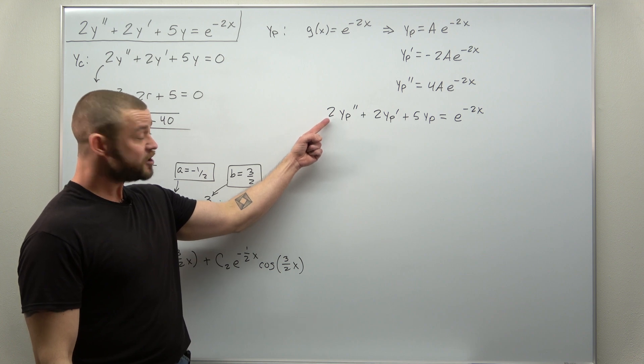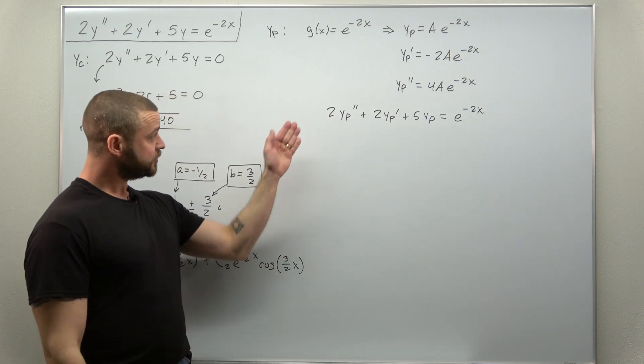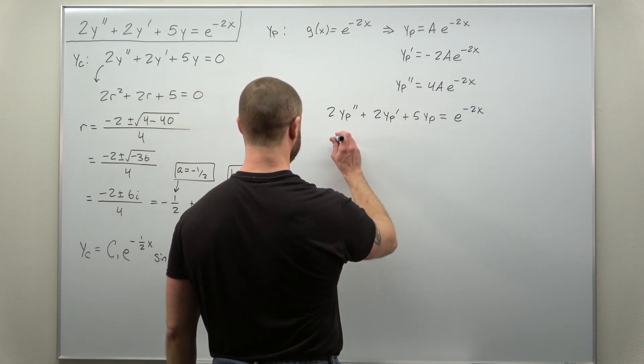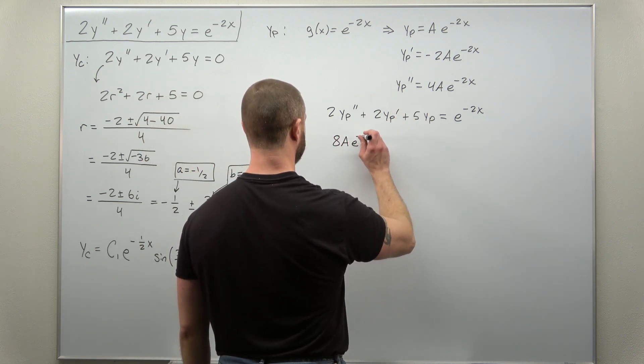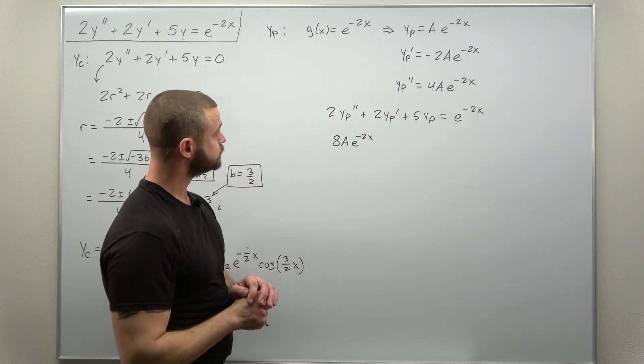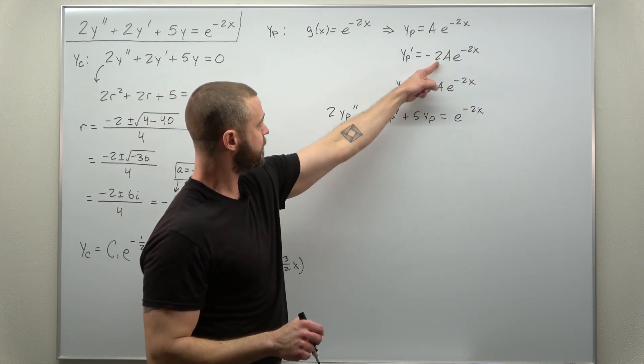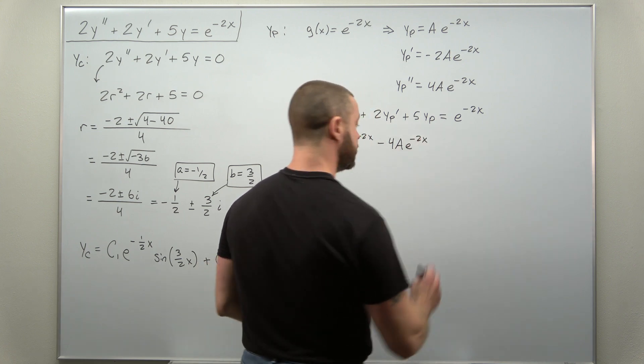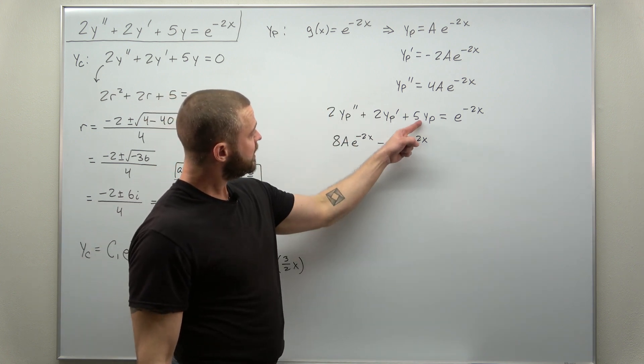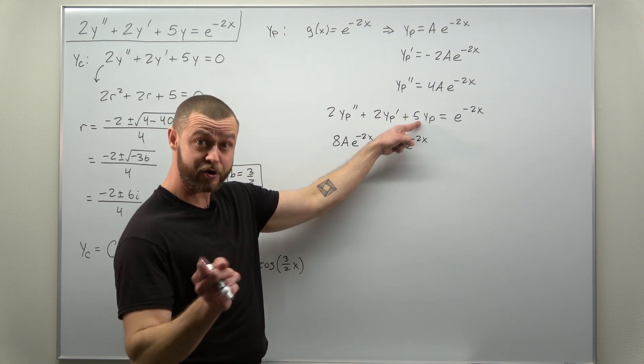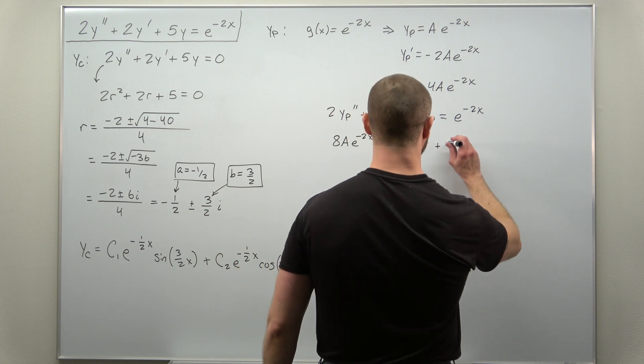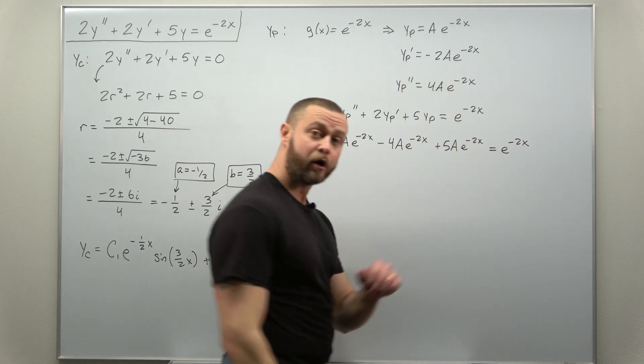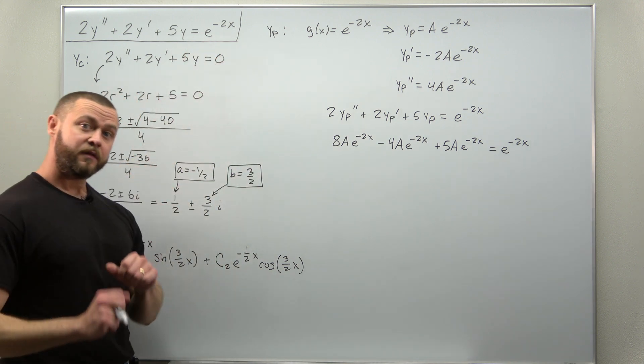All right, let's go ahead and plug everything in. Notice each of our function and derivatives terms is multiplied by a constant, 2, 2, and 5. So just be careful. When we plug in our second derivative term, looks like we can write that as 8a and that's times the exponential. Looks like when we plug in our first derivative term, we have negative 2a times 2. We can write that as minus 4a times e to the negative 2x. And when you plug in your other term here for yp, just the function, no derivatives, we get 5 times that. So plus 5a times e to the negative 2x. And that all should equal e to the negative 2x, the non-zero right-hand side.